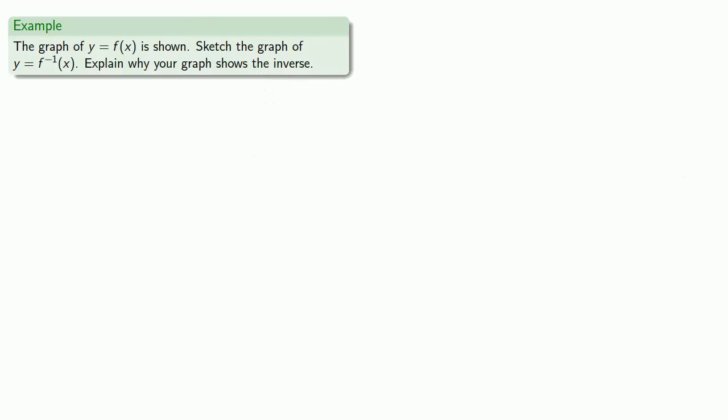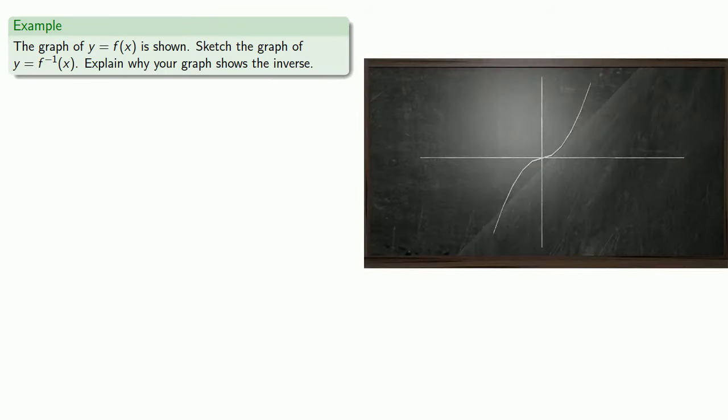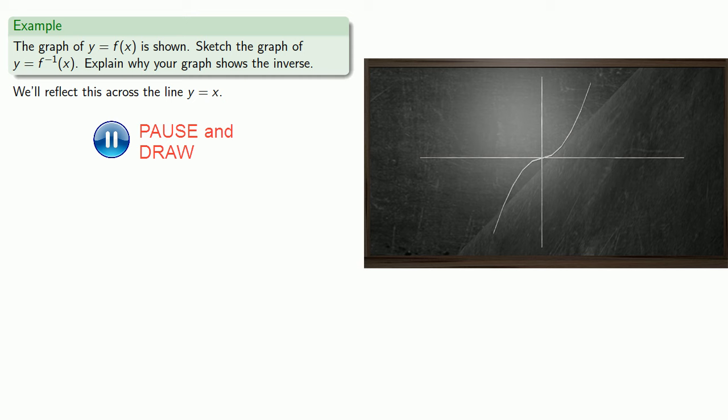So for example, suppose we have the graph of y equals f of x. We'll sketch the graph of y equals f inverse of x, and we should explain why our graph actually shows the inverse. So we'll start by reflecting this graph across the line y equals x.